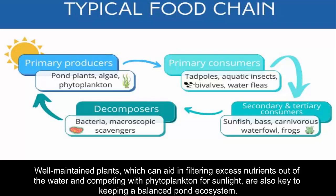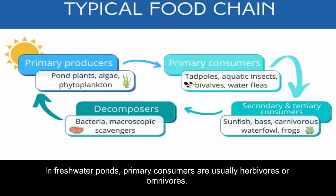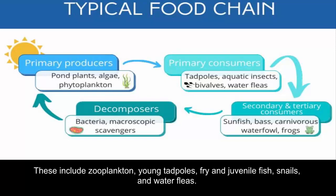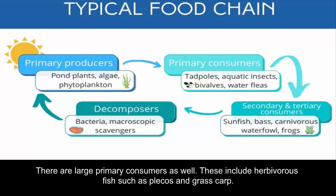Well-maintained plants, which can aid in filtering excess nutrients out of the water and competing with phytoplankton for sunlight, are also key to keeping a balanced pond ecosystem. In freshwater ponds, primary consumers are usually herbivores or omnivores. They are fairly small in size, though they are more likely to be seen by the naked eye compared to microbial producers. These include zooplankton, young tadpoles, fry and juvenile fish, snails, and water fleas. There are large primary consumers as well, such as herbivorous fish like plecos and grass carp.